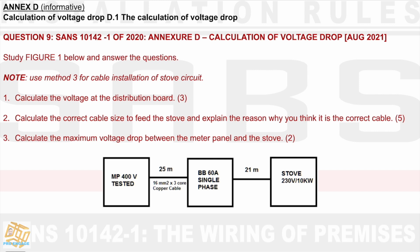Calculate the voltage at the distribution board — that would be the voltage at the DB. Also calculate the correct cable size to feed the stove and explain the reason why you think it is the correct cable. Then calculate the maximum voltage drop between the meter panel and the stove — between those two points. We need to calculate and add all the voltage drops: voltage drop here, voltage drop here, and it will be the total voltage drop.